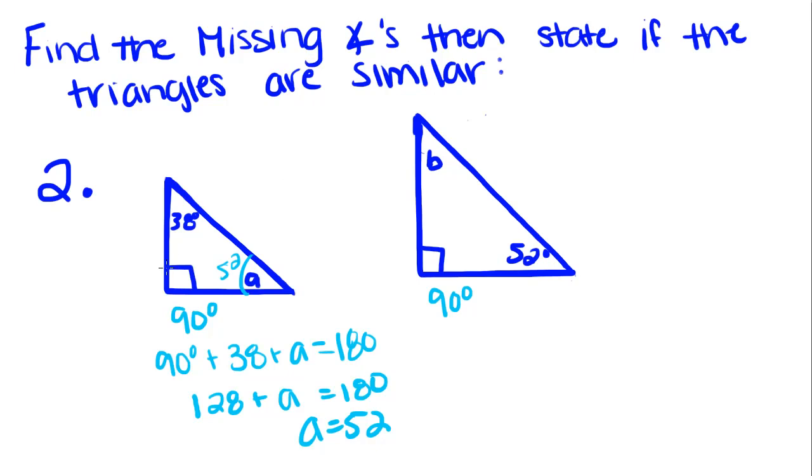So, since we know that this is a right angle and this is a right angle, that means that these two angles are congruent, because all right angles are congruent to one another. And we know that this is 52 degrees and this is 52 degrees. So we can say, therefore, the triangles are similar by angle-angle.